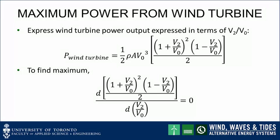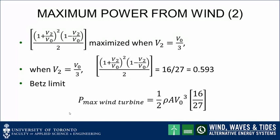It's useful to express the power equation in terms of v2 over v0, which puts the upstream wind speed v0 cubed in front of the bracket term. The wind turbine power output is maximized when the term in square brackets is maximized. To find that maximum, we differentiate the term in square brackets with respect to the normalized downstream velocity v2 over v0 and set that equal to zero. From the differentiation, the term in square brackets is maximized when v2 is equal to v0 over 3. At that condition, the term has a numerical value of 16 over 27, or 0.593.